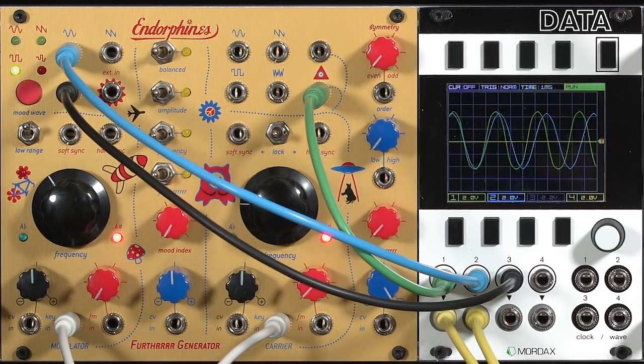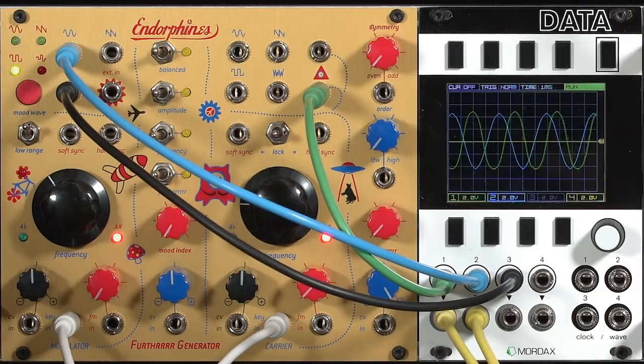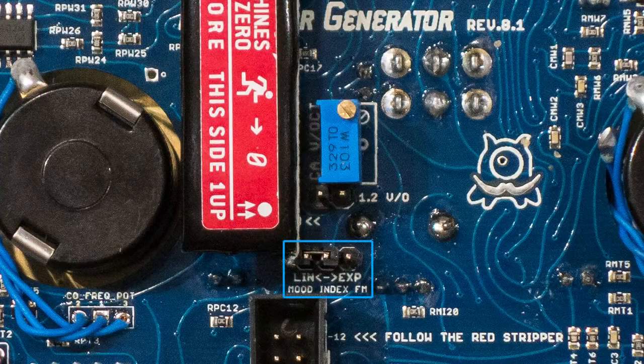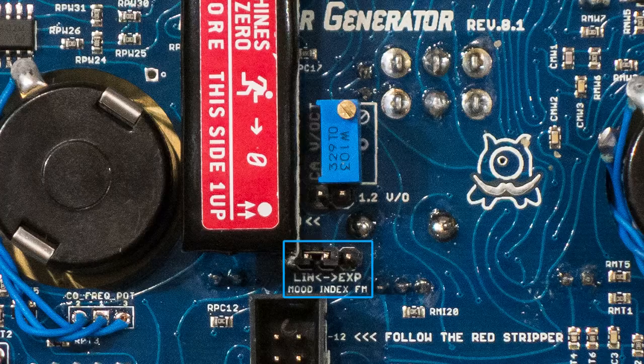The endorphins comes from the factory as a dual analog triangle core VCO without through zero FM. There's a jumper on the back to decide whether you're using linear or exponential FM for the modulation or so-called mood bus.